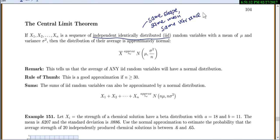If you start with a bunch of random variables that all look the same, they all have the same mean mu and variance sigma squared, then the distribution of their average will be approximately normal. So x-bar will be approximately normal with mean mu and variance sigma squared over n.